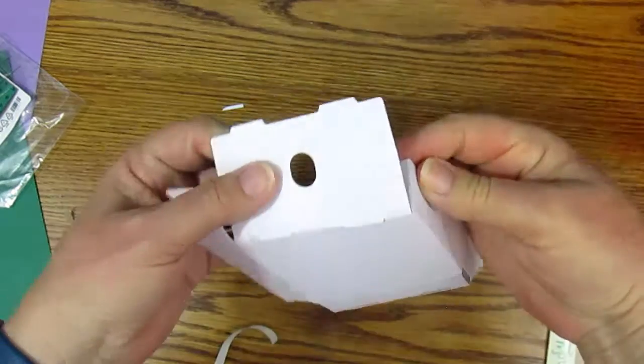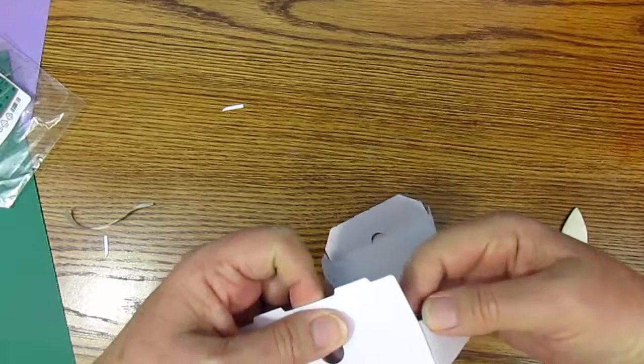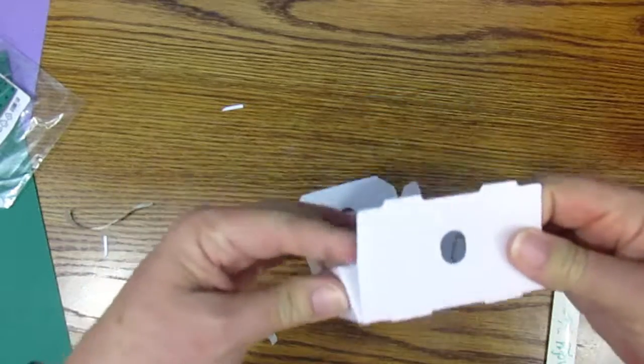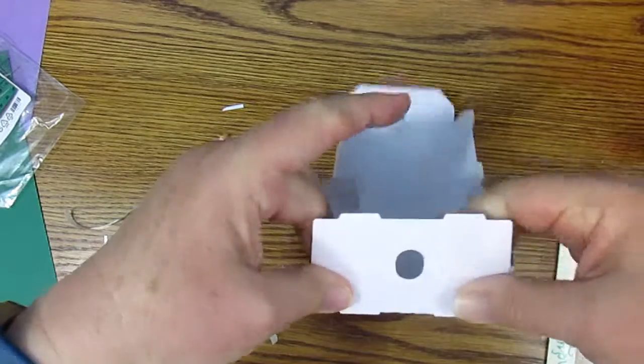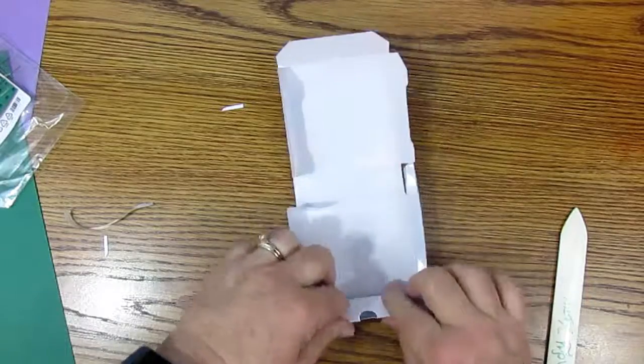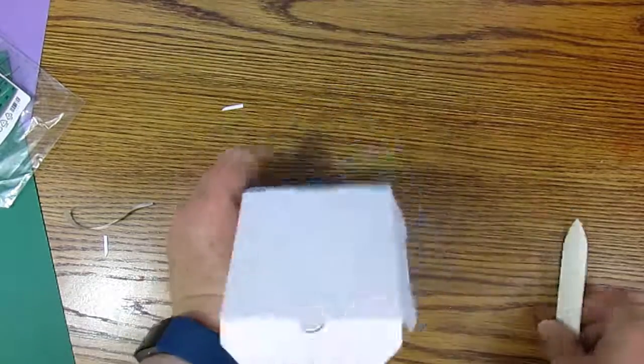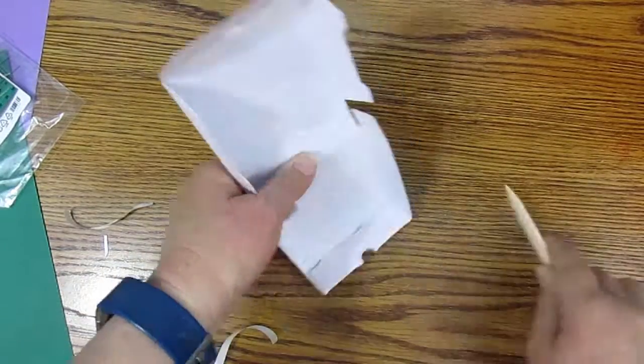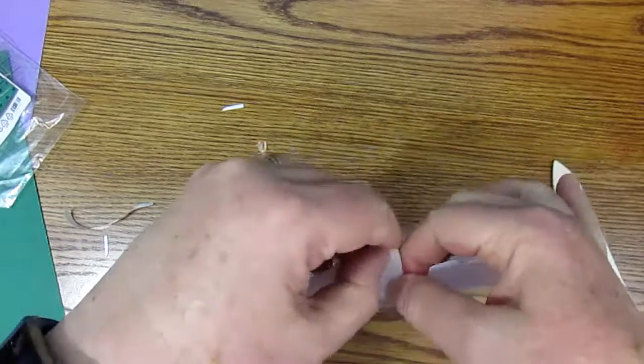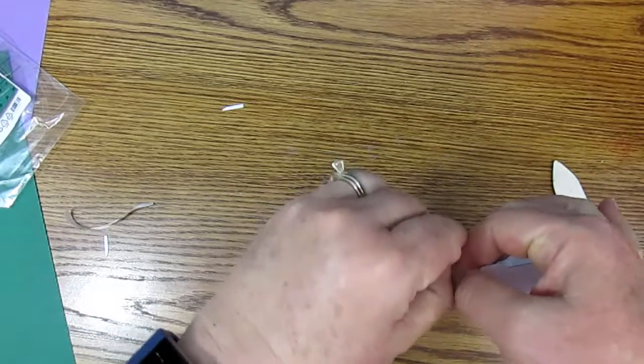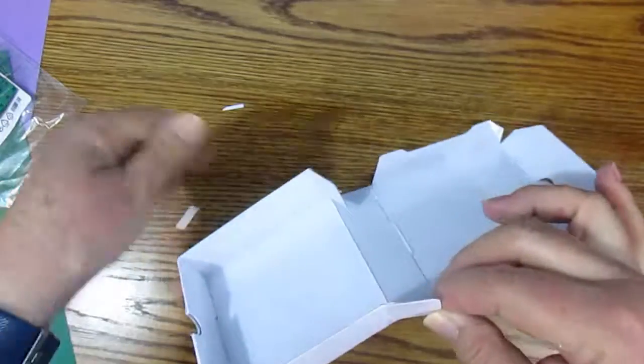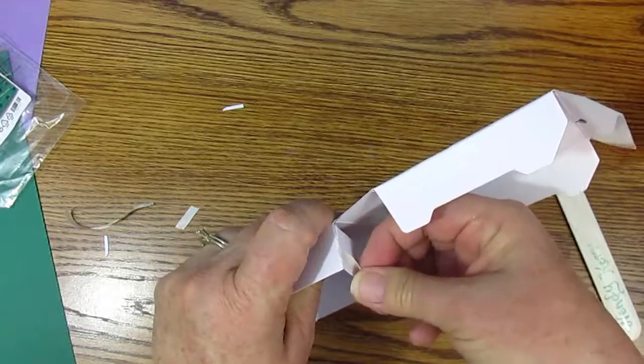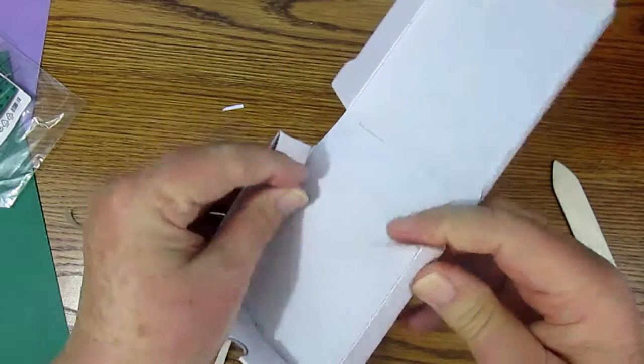And fold it over. Match it up. Almost match it up. There we go. We'll do the same on this other side. And then fold this down. We'll use our bone folder to just rub and make sure the adhesive sticks. Now we'll do the same for this. And this one. Fold them both in like that.